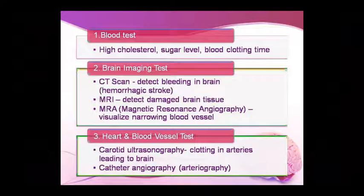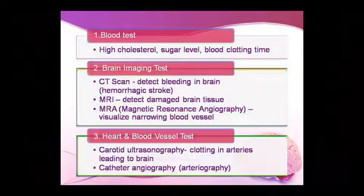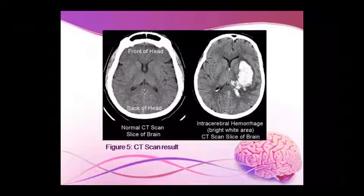For blood tests, we check cholesterol level, sugar level, and blood clotting time. Brain imaging: CT scan is used to detect brain bleeding in hemorrhagic stroke; MRI is used to detect brain tissue damage. MRI and magnetic resonance angiography check for narrow blood vessels. Carotid ultrasonography checks the arteries for clotting. Catheter angiography and catheter arteriography can also be done, as well as CT scan to detect intracerebral hemorrhage.